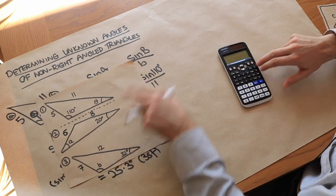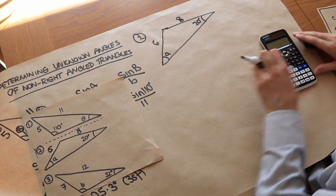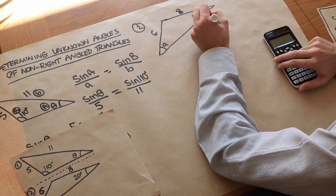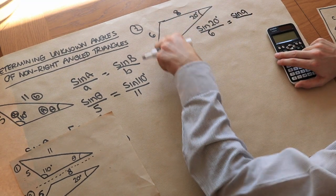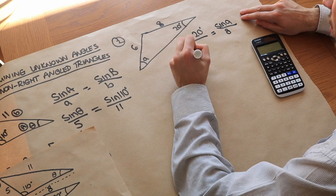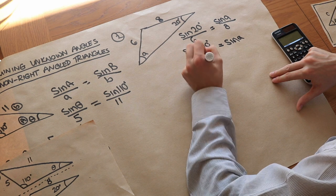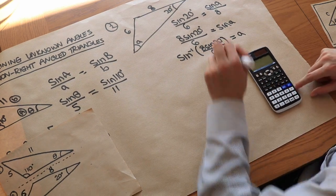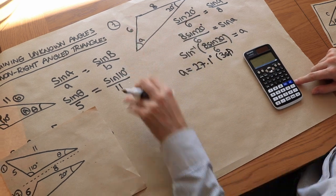Now why don't you have a go at this second one — we've got a very similar triangle and I'd like you to find angle a. You may want to pause the video. We've got side opposite angle, side opposite angle, so it's the sine rule: sine of 20 degrees over the opposite length 6 equals sine of a over the opposite length 8. Times by 8 gives 8 sine 20 degrees over 6 equals sine a, then inverse sine of that gives a equals 27.1 degrees to three significant figures.